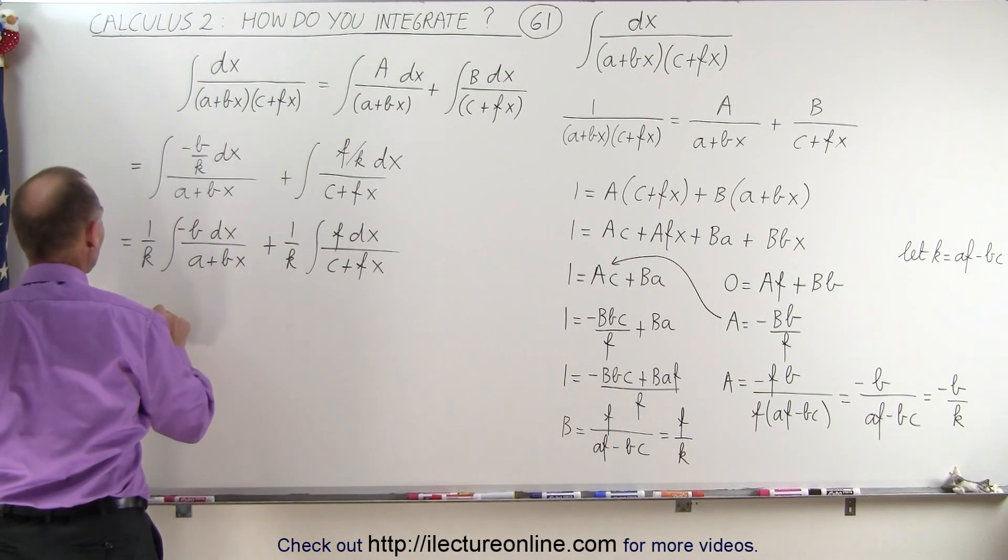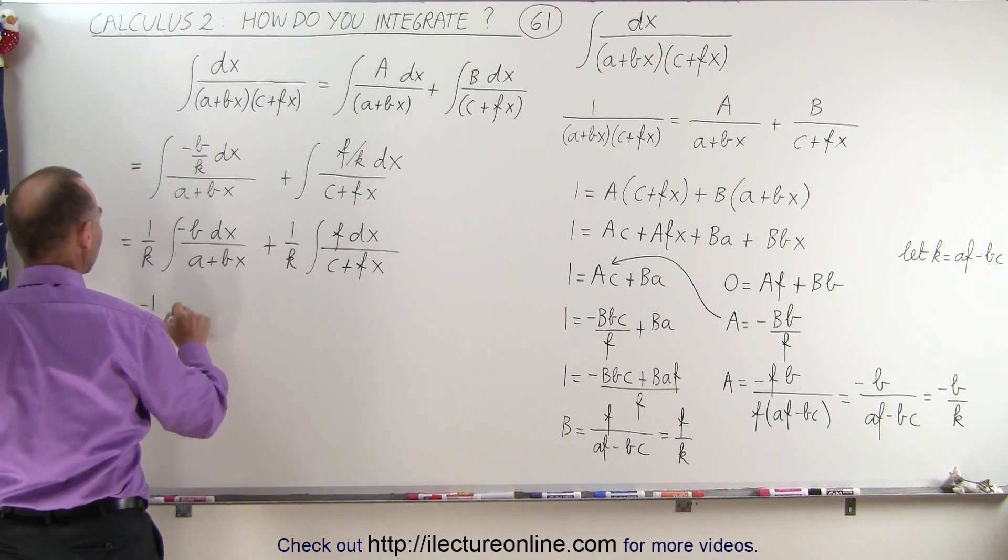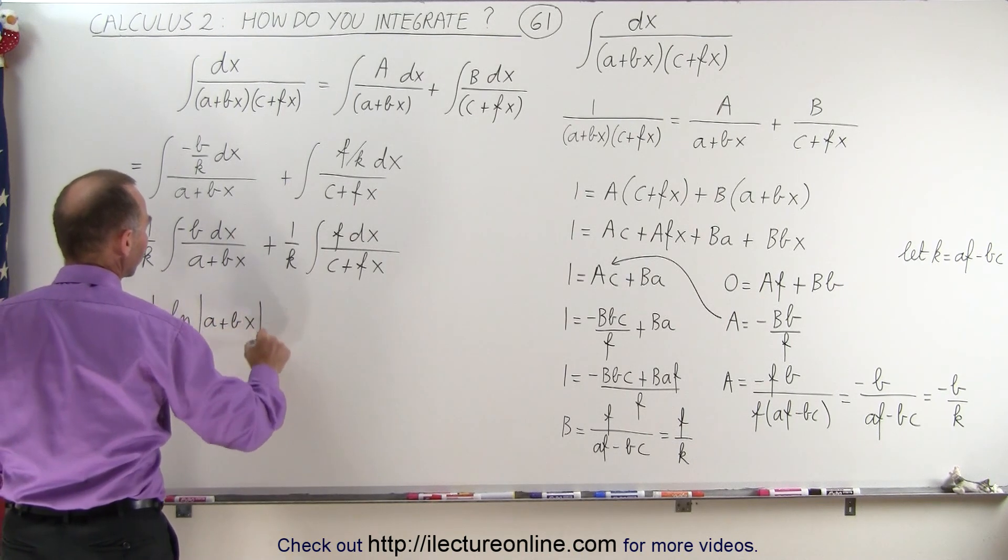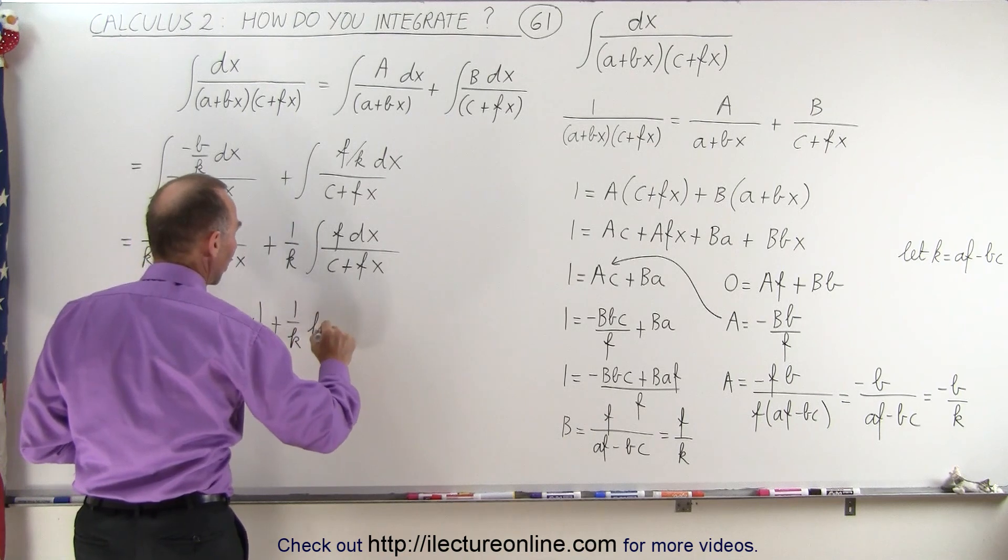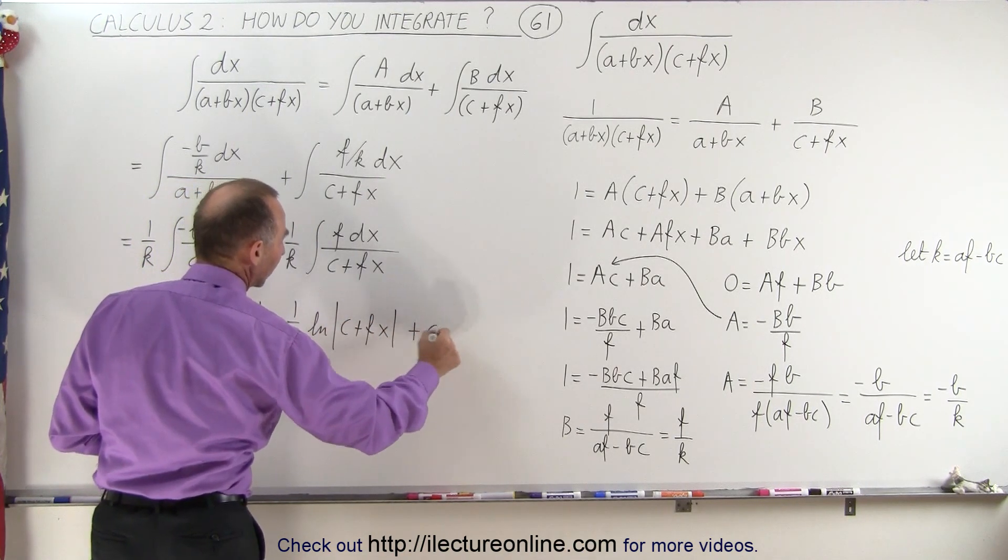So on the left side we get this is equal to 1 over k times the negative, and I'll put the negative there anyway, the negative natural log of (a + bx) plus 1 over k times the natural log of (c + fx), and of course we have a constant of integration.